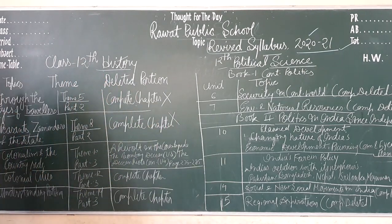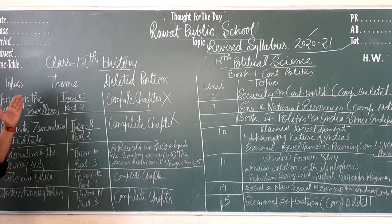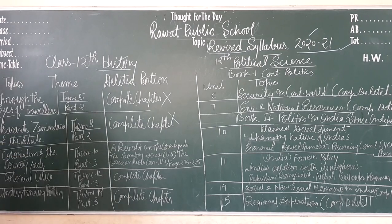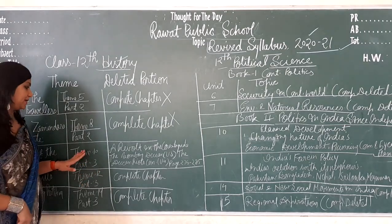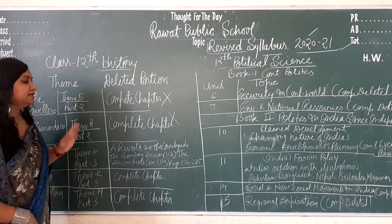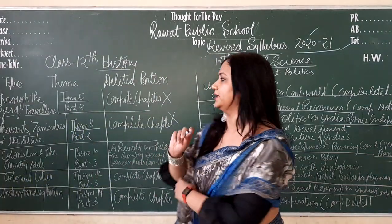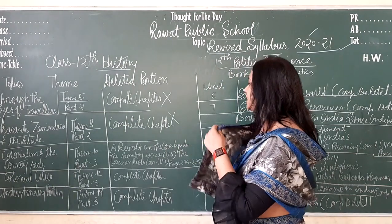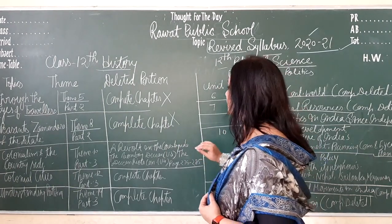What is left: Chapter 5 and Chapter 8. Then Colonialists and the Countryside, Theme 10, Chapter Part 3 — this chapter is completely deleted. No Part 3. This chapter is deleted.